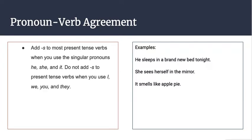Do not, though, add -s to present tense verbs when you use I, we, you, and they. Our examples here on the right side: It says he sleeps in a brand new bed tonight. If you look at the word sleeps, that's our verb. We only add the -s because we had the pronoun he—there's only one person sleeping in that brand new bed tonight.